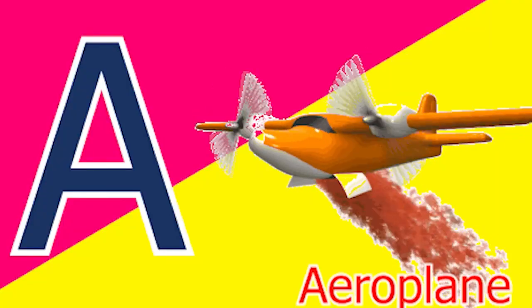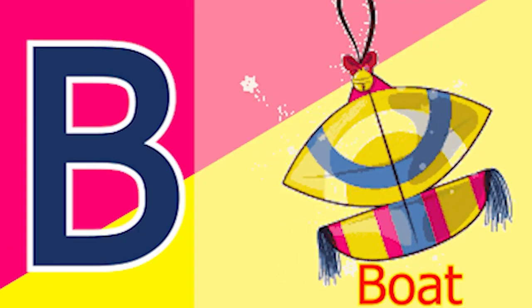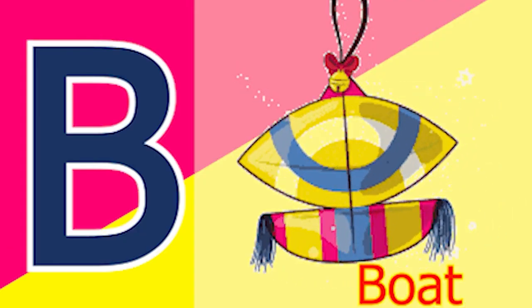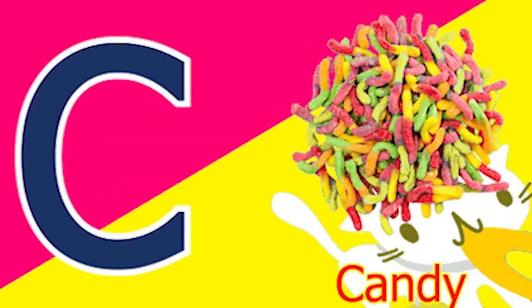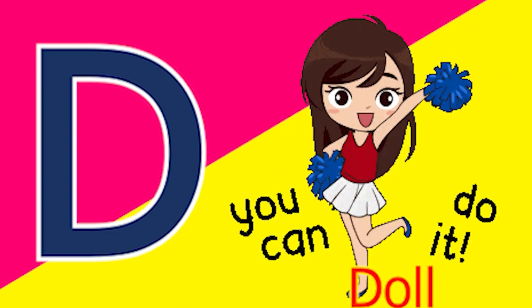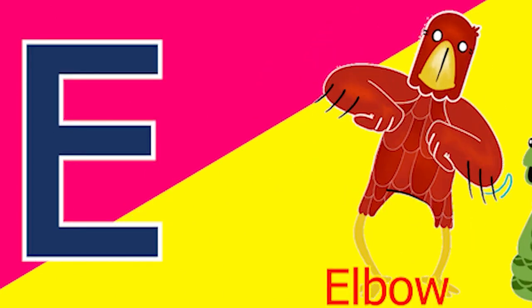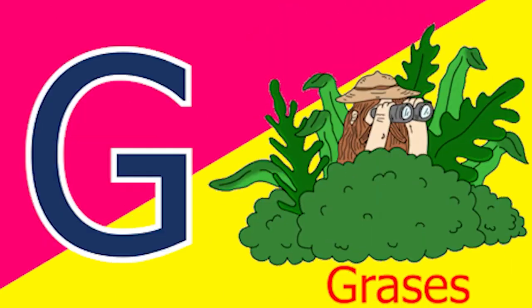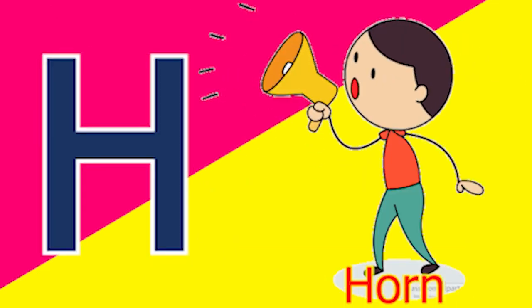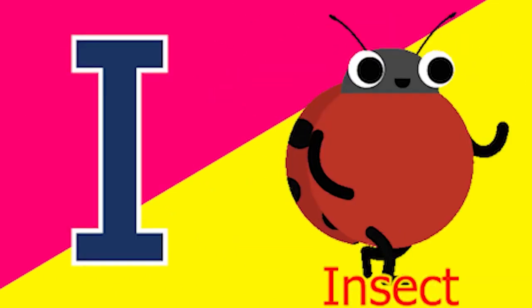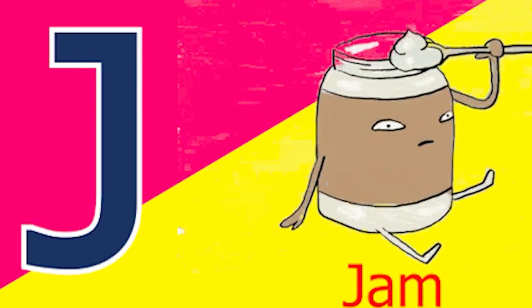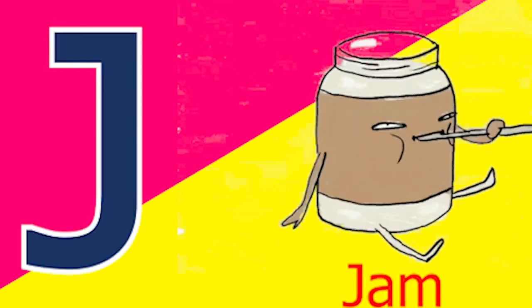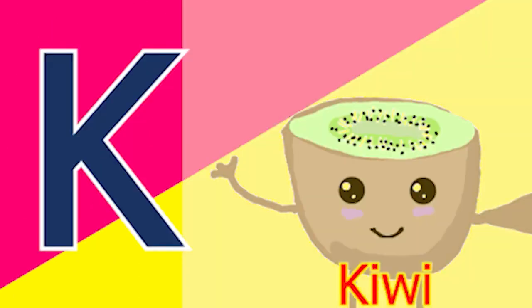A for aeroplane, B for boat, C for candy, D for doll, E for elbow, F for foot, G for glass, H for horn, I for insect, J for jam, K for kite.